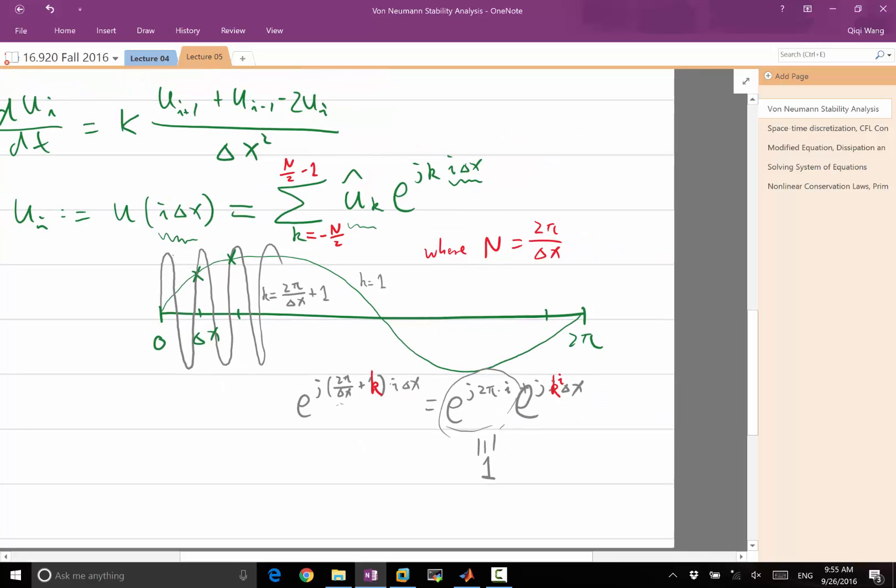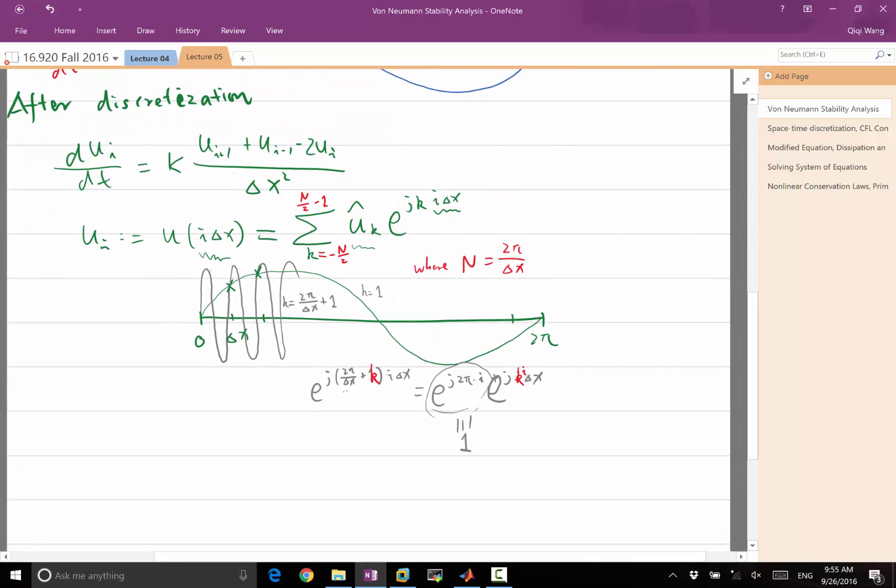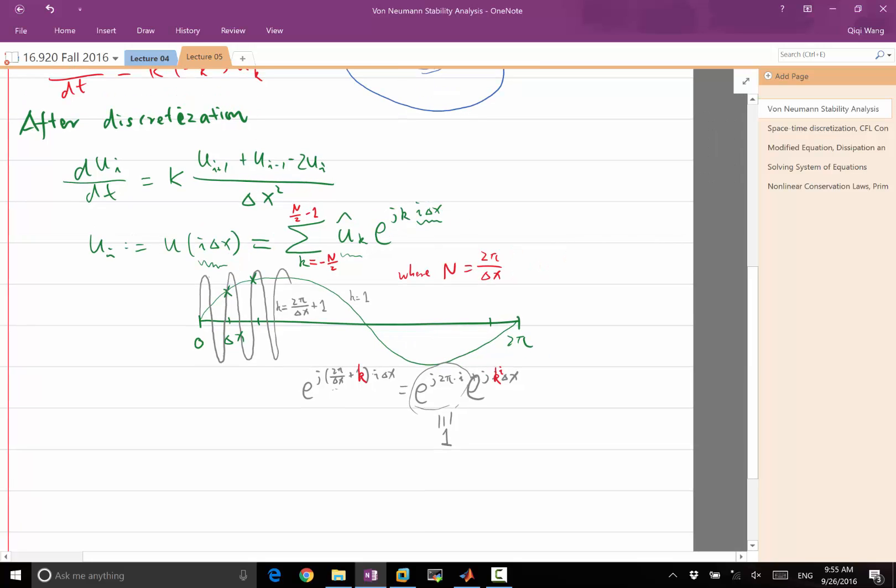So this is what we call a discrete Fourier series, instead of a continuous Fourier series. A continuous one goes from minus infinity to infinity. Now, because of this effect called aliasing, we always have k go from minus n over 2 to n over 2 minus 1.